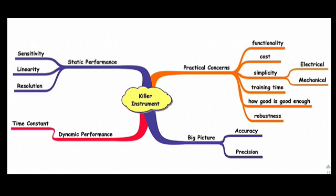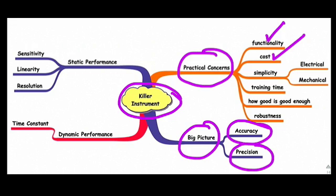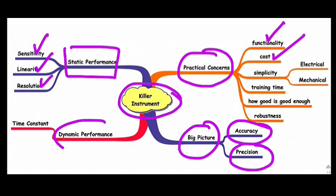This slide summarizes quality. In other words, how to design or select a killer instrument. Think of practical matters. Things like, will the instrument measure what I want it to measure? What's the cost? Think of the big picture. How close is a measurement to the true value? And how close are the measurements to each other? Think of the static performance. And we've talked about some variables for that. And think about the dynamic performance if whatever you're measuring is varying with time. Thank you very much. I hope you have enjoyed the video.